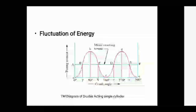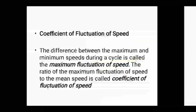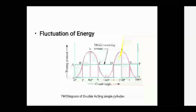From R to S, the required energy is RDES, but extra energy DDE is available, which is supplied to the flywheel, and the flywheel speed increases. Then from S to E, the engine supplies SE energy, but EFE energy is not available and is again extracted from the flywheel, causing the flywheel speed to decrease.